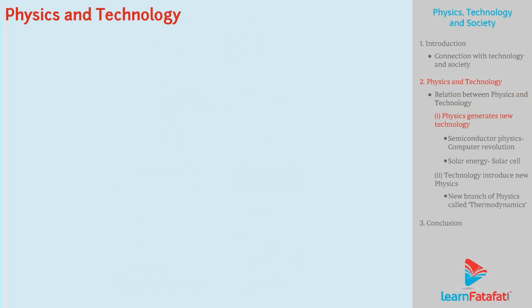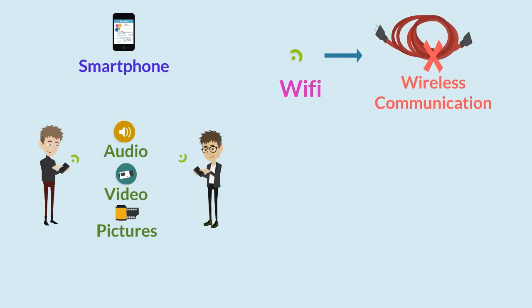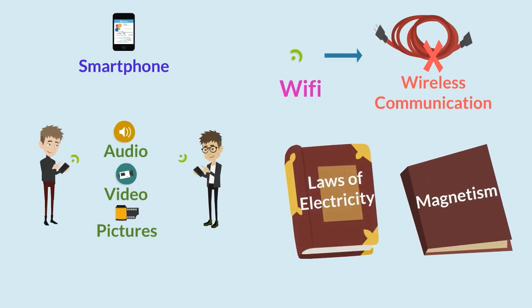Now we will see how physics generates new technology. Do you know that we all have smart phones? We share audio, video and pictures with our friends with the help of Wi-Fi. What is Wi-Fi? It is a wireless communication technology developed because of the discovery of basic laws of electricity and magnetism.